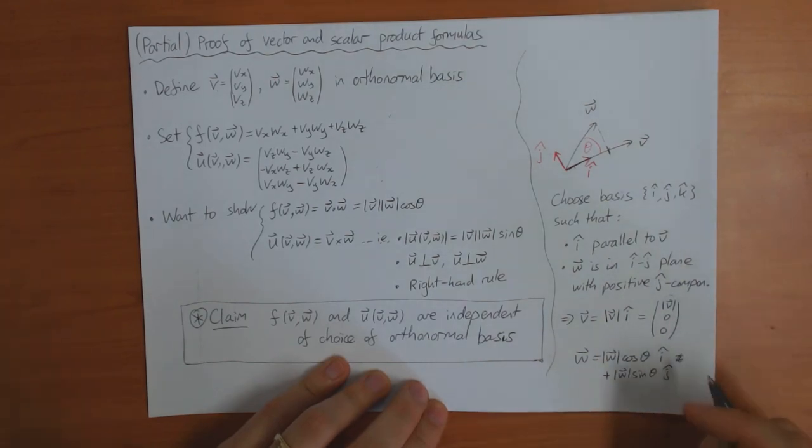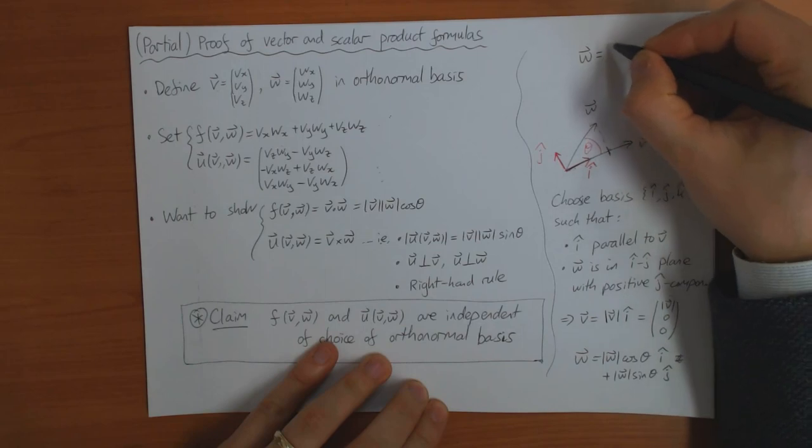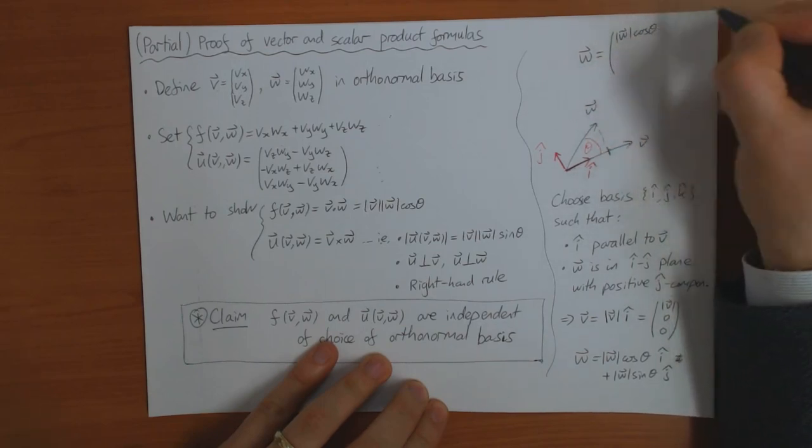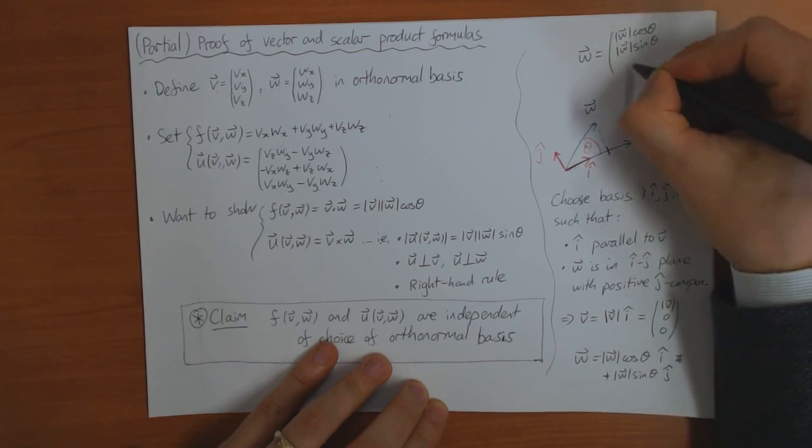So as a vector, I ran out of space. So as a vector, w is equal to, as a column vector, w cos theta, w sine theta, zero.